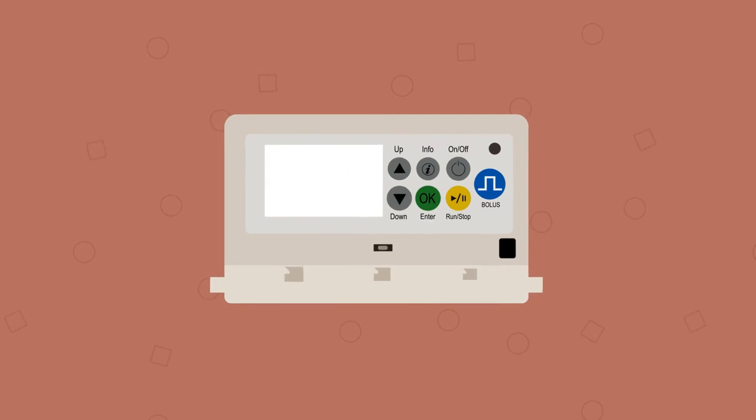Step 1: Make sure your Nimbus Pain Pump is powered off. If the screen is still on, press and hold the on/off button for 3 seconds or until the screen is blank.